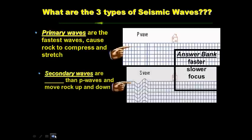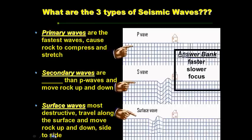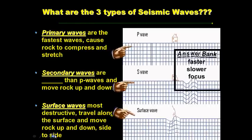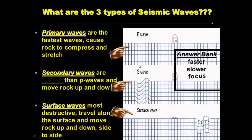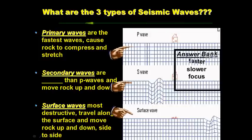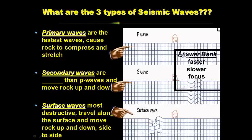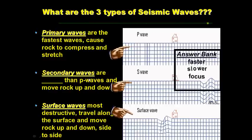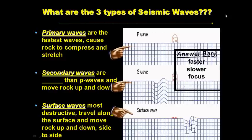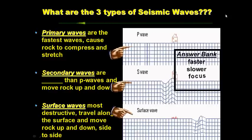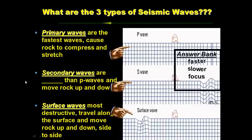So, what are the three types of seismic waves? Primary waves, secondary waves, and surface waves. Use the answer bank to determine which word best completes the blank. Go ahead and pause this while you get this down.